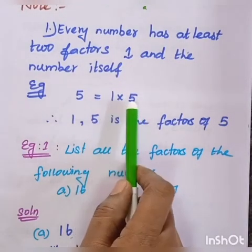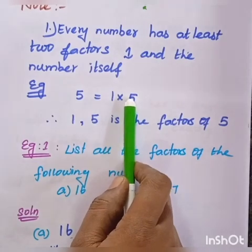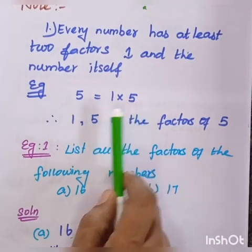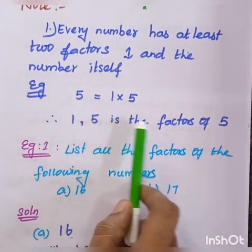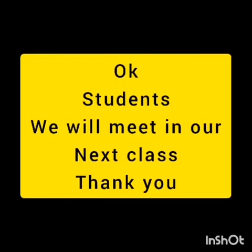For example, 1 and 5 are factors of 5. So any number has at least two factors: 1 and the number itself. For 5, the factors are 1 and 5; for 10, factors include 1, 2, 5, and 10.